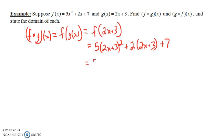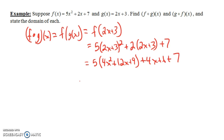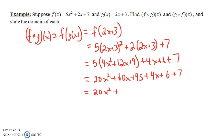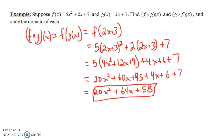We can simplify. Multiplying out 2x plus 3 times 2x plus 3 — FOILing that out — gives 4x squared plus 12x plus 9. Distributing the 2 gives plus 4x plus 6, plus 7. Now distributing the 5 gives 20x squared plus 60x plus 45, and we still have the 4x plus 6 plus 7. Combining like terms: 20x squared plus 64x plus 58. That is the function f composed of g of x.